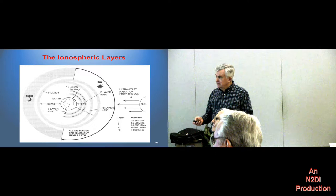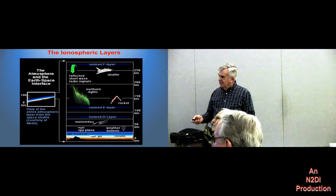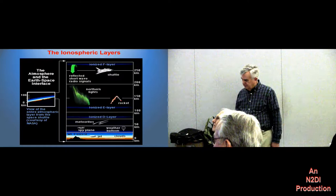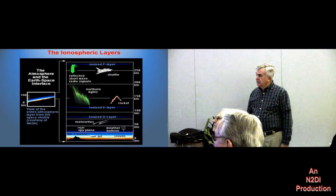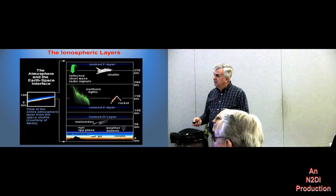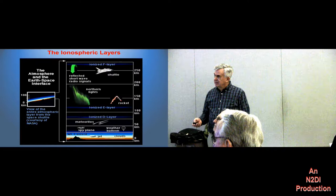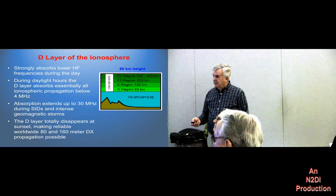Here's another look at the relative heights of things. Meteors — shooting stars — are a little bit lower in altitude than the D layer. Sounding rockets are kind of at the level of the aurora. The space shuttle flies at about the same altitude as the F layer. So there's the D layer at about 80 kilometers — it's an absorbing layer that happens every day during the day, and that's what causes 80 meters to go completely dead during the daytime. During SIDs, that absorption extends all the way up to 10 meters.